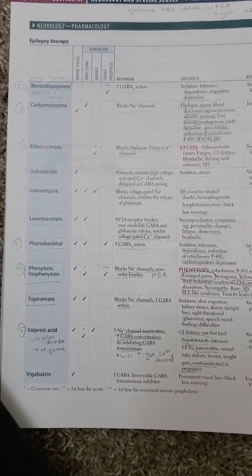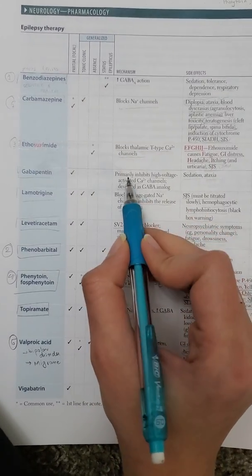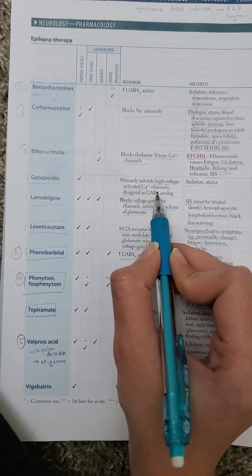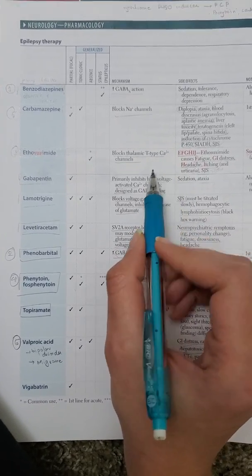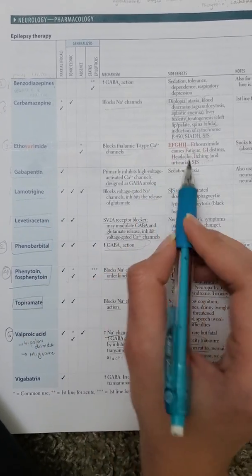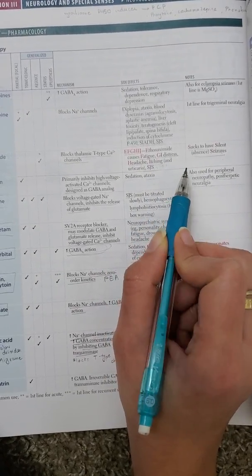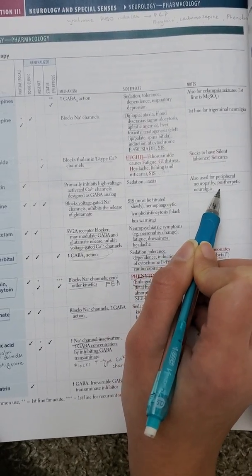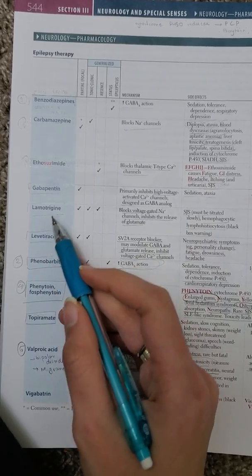Gabapentin is a drug that affects calcium channels, working by inhibiting high-voltage gated calcium channels. It is also a GABA analog. Another form of gabapentin is pregabalin. Gabapentin is considered a safe drug and is beneficial in diabetic patients. Its side effects include sedation and ataxia. Its most important use is for neuropathic pain and post-herpetic neuralgia.